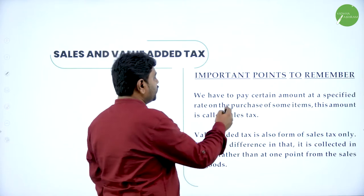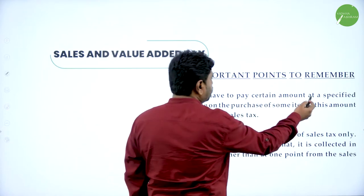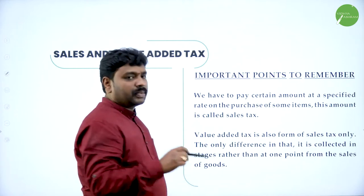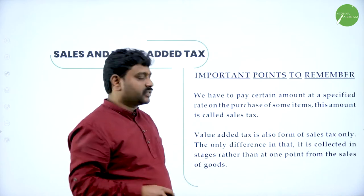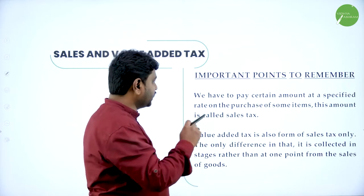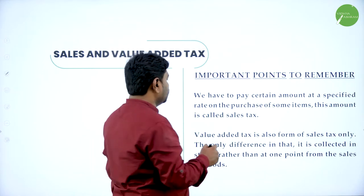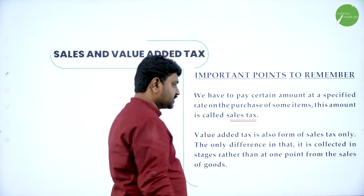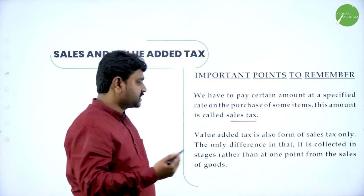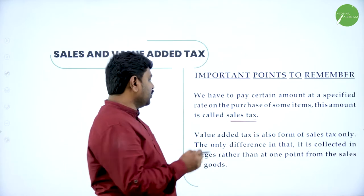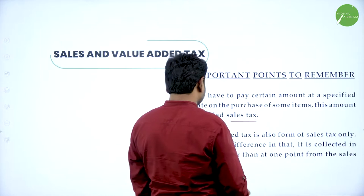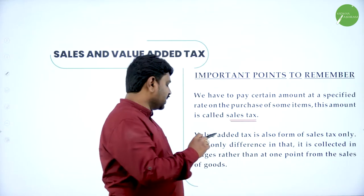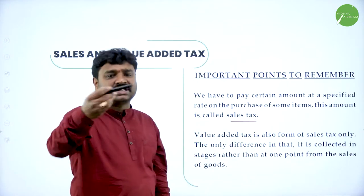We have to pay a certain amount at the specified rate on the market price. For that we have to add tax, and this extra amount we call sale tax. Value added tax is also a form of sale tax, but the difference is that it is collected at several stages.